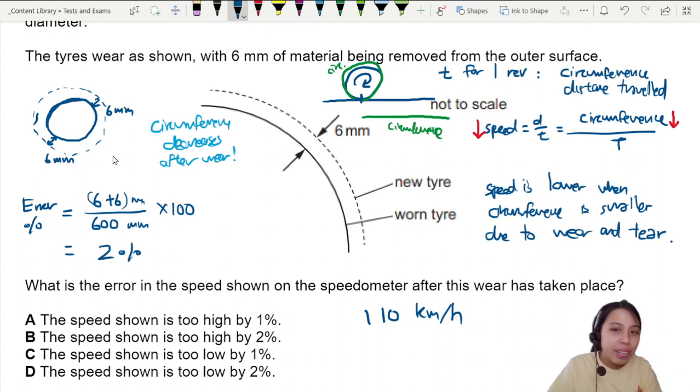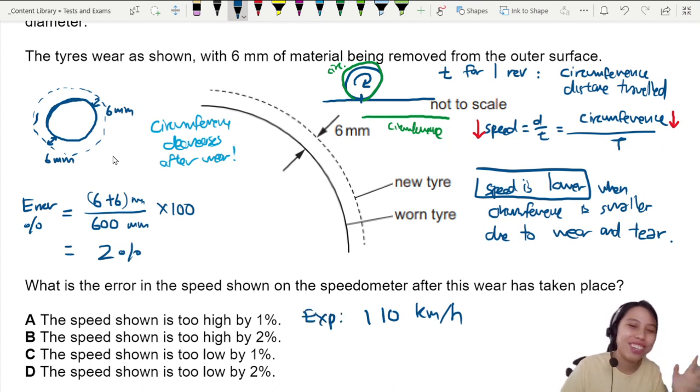Maybe it's 2% error. Let me calculate: 110 times 2 divided by 100, that's 2.2. Maybe 108 kilometers per hour. That's how fast your car is actually going, but the speedometer doesn't know. That means your speed shown on your meter is too high.